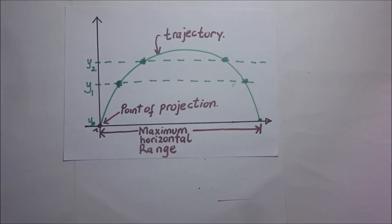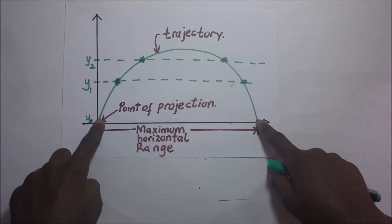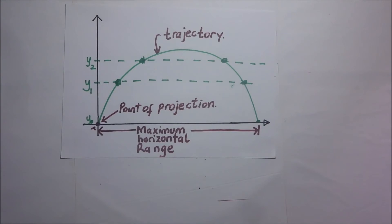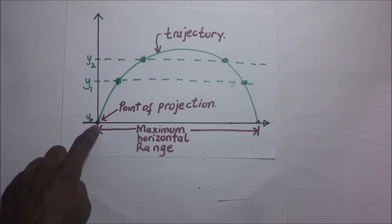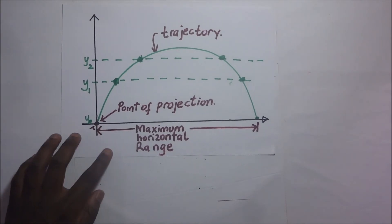To repeat the definition: the maximum horizontal range is simply the distance along the horizontal plane through the point of projection that the projectile travels before reaching the same vertical position as it started from.